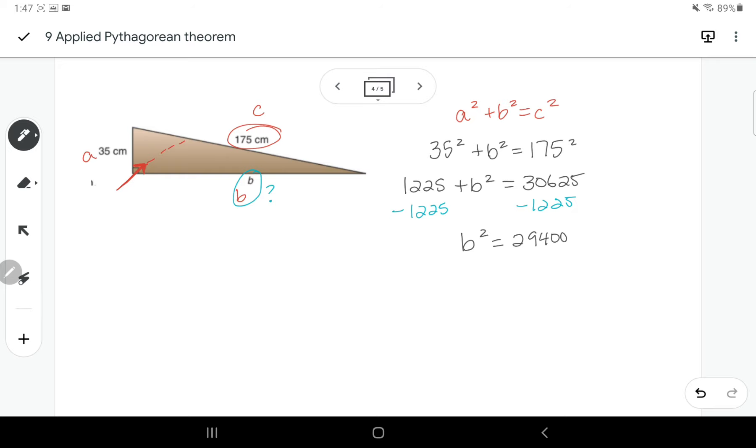So now I've got b squared here equals 29,400. Now we're kind of back to where we were at the other one. We have to do the opposite operation, which is a square root. So the square root of 29,400, it looks like such a big number, but square root will make it much smaller.